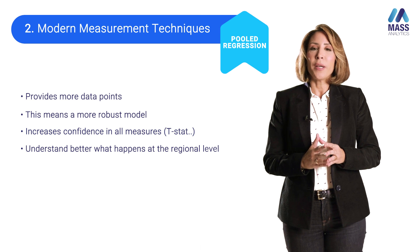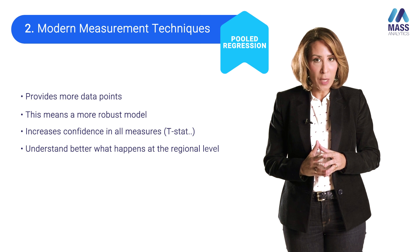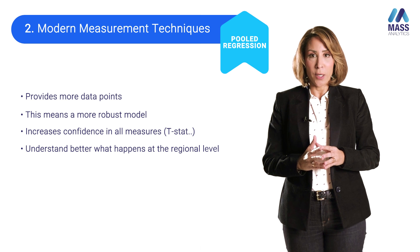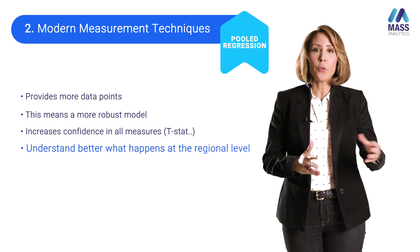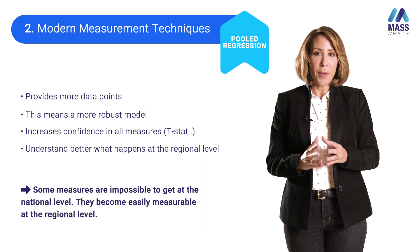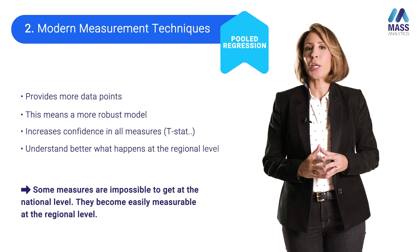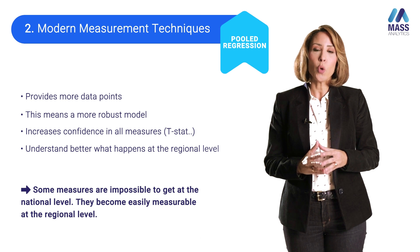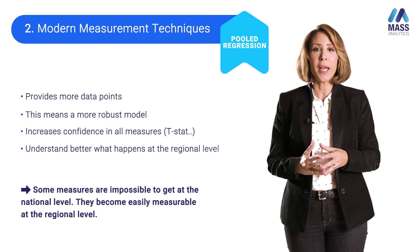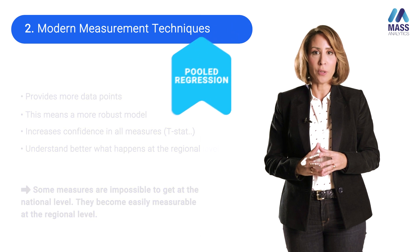Earlier on, we talked about the granularity of the data feeds, and one of the components of the triangle we presented is the regions. When we get that granular data, we can apply pool regression to better understand what is happening at the regional level. Measures that are impossible to get at the national level could be easily obtained using more granular regional data.